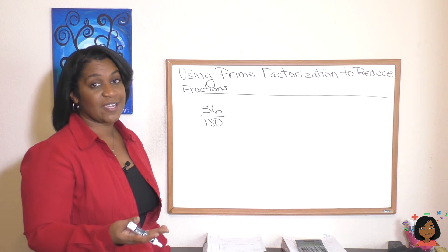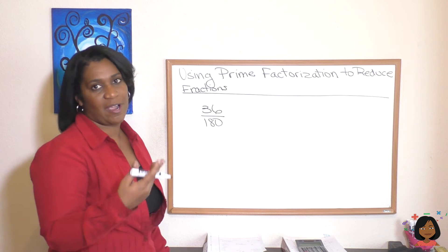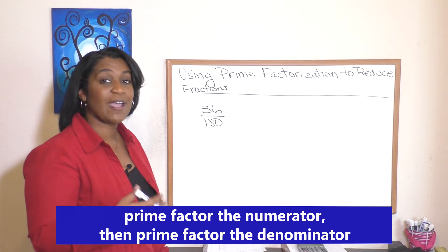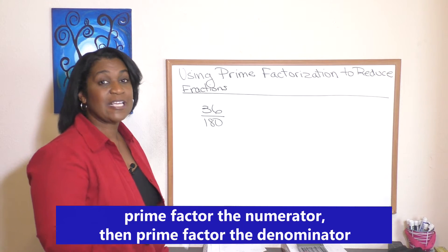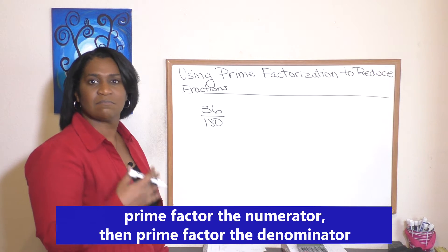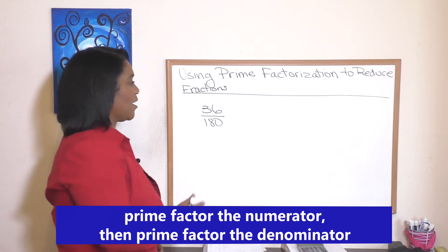So we have the number 36 over 180. Let's prime factor each of these individually and take it from there.